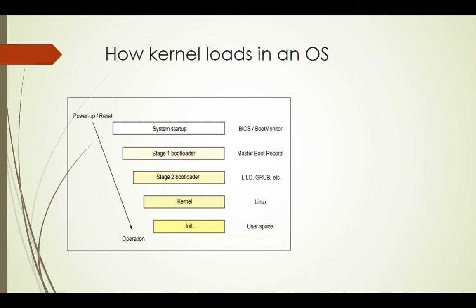How does the kernel load in an operating system? First, when we power up our system and press the power button, the system start happens. It loads the stage 1 bootloader — this is the master boot record. The master boot record calls the stage 2 bootloader, which is GRUB or LILO.